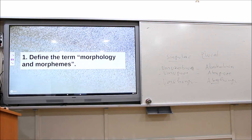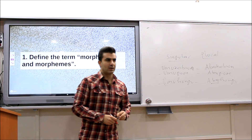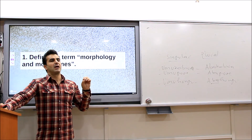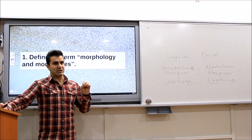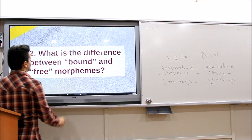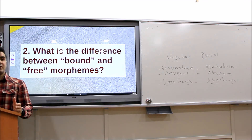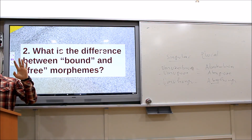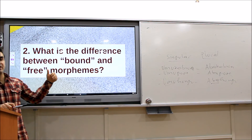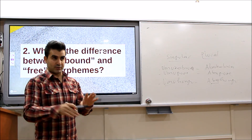So, define the term morphology and morphemes. Morphology is the study of the basic forms and elements used to convey a message in a language. What is the difference between bound and free morphemes? Bound morphemes cannot stand alone — they have to be attached to another form. Whereas free morphemes can stand separately, individually, as single forms.